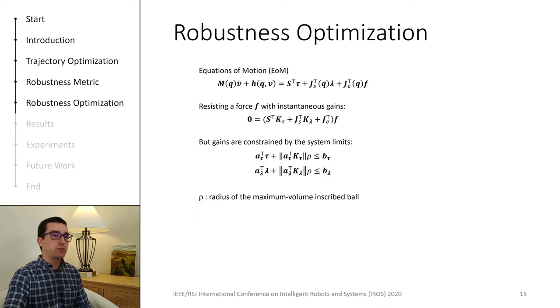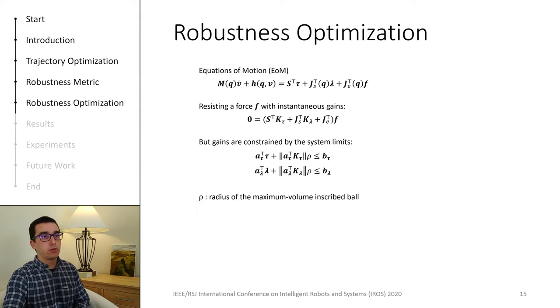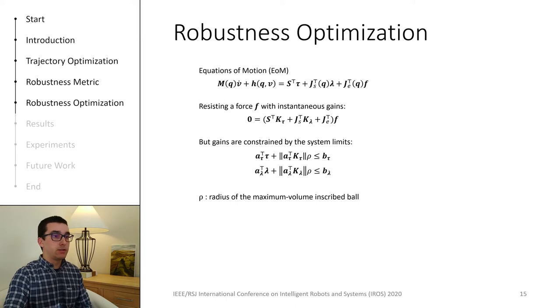If we do not consider the actuation limits or the friction cone boundaries, we would always be able to find some matrices that are able to cancel any arbitrary force. But in reality this is not true, and the torques that a system can use to resist a force are limited by its actuation limits, as well as the torques that are required at a specific point in time by a nominal trajectory.